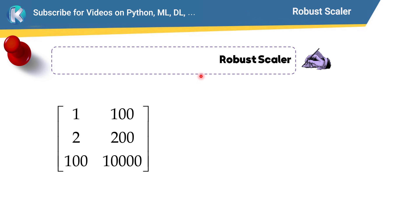Now let's talk about the robust scaler. Suppose that this is our data. As you can see in the first column, this 100 is an outlier, and in this column, this value is also an outlier. So here's the question: what is the benefit of using a robust scaler? This kind of scaler is more robust to outliers like this.